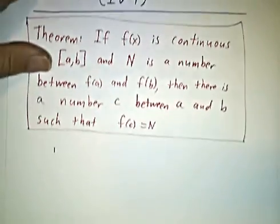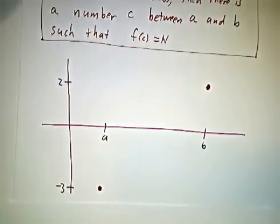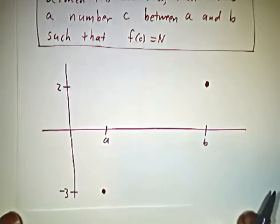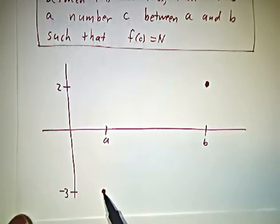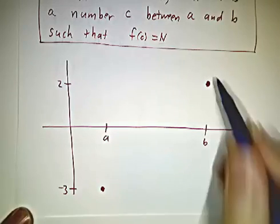Now that's a bit of a mouthful, so let's draw a picture. Let's imagine we've got a function where f(a) is negative 3, and f(b) is 2.